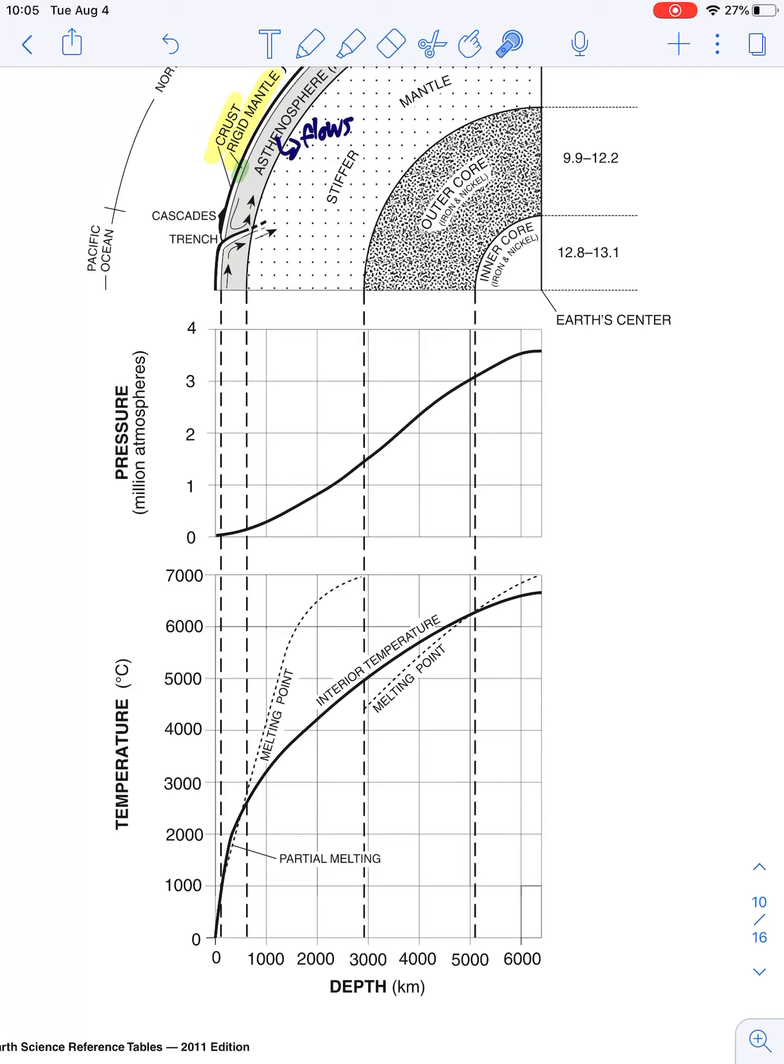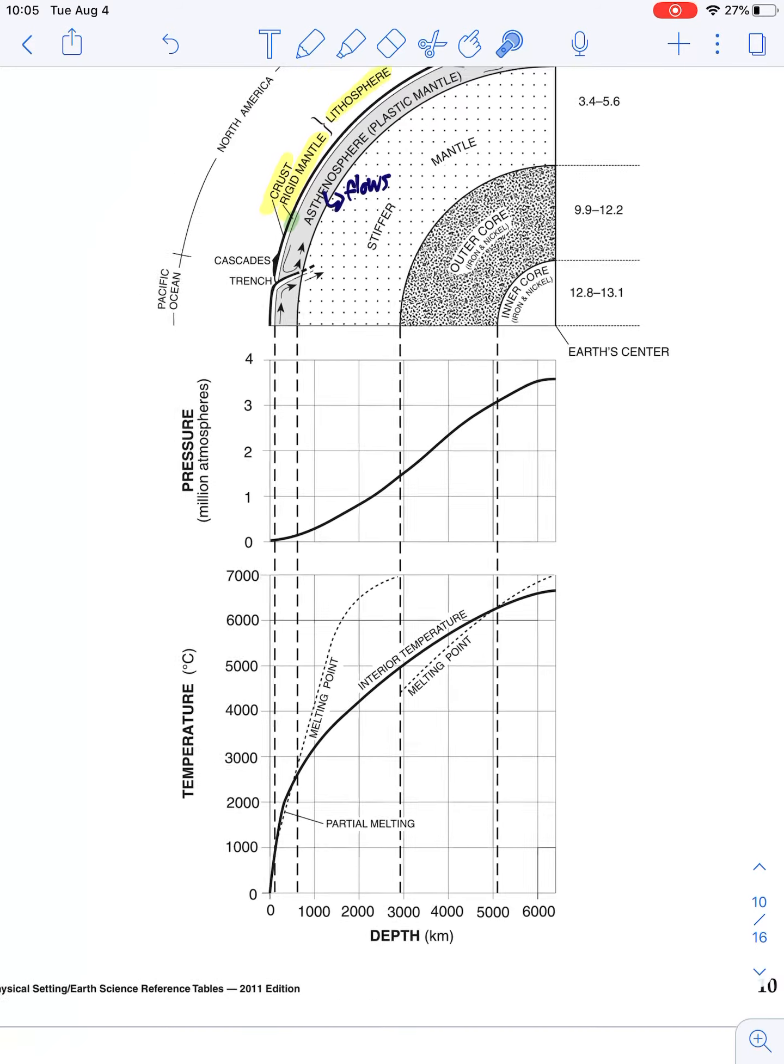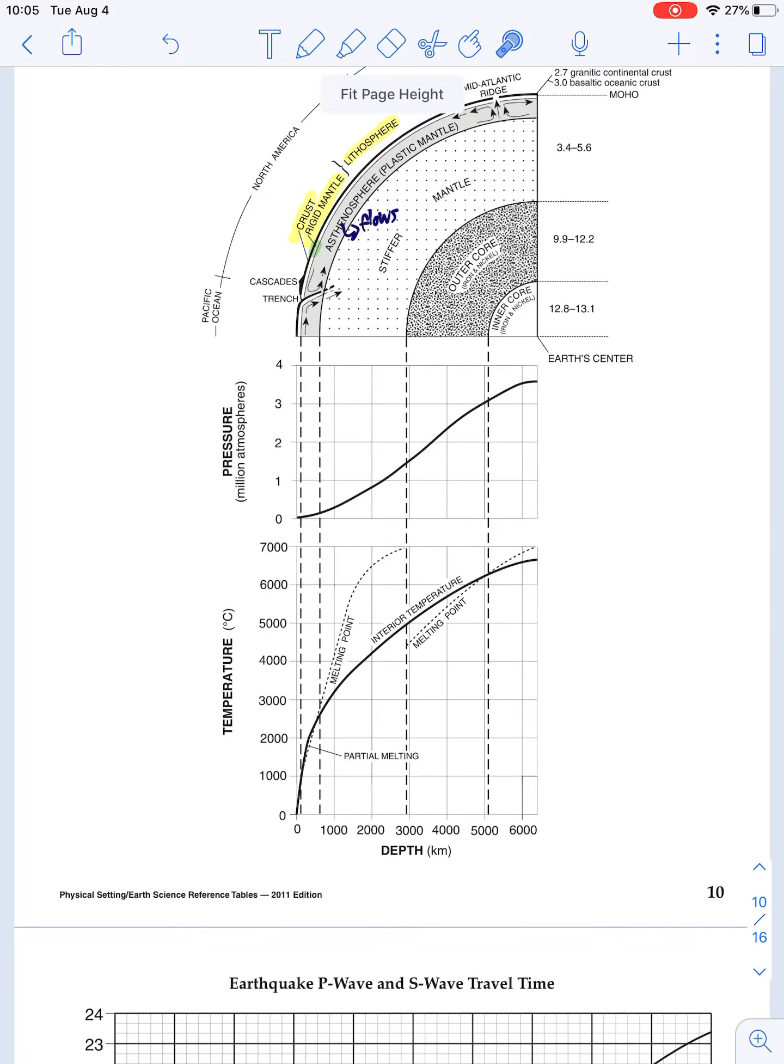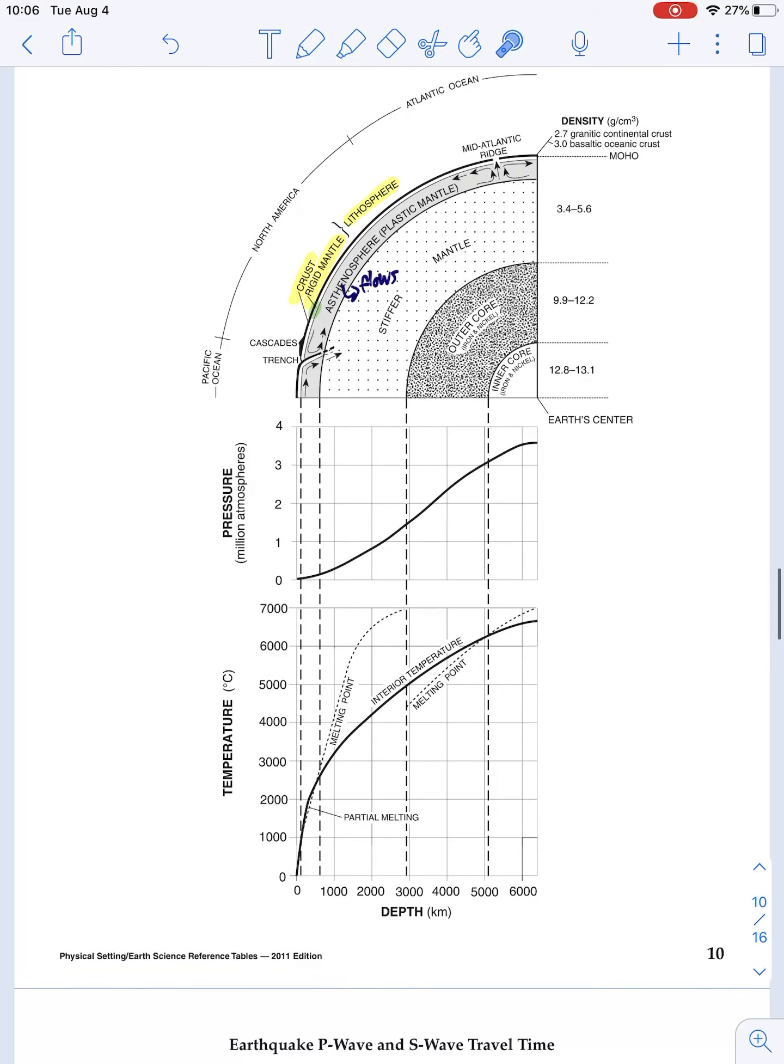The last thing that I really wanted to point out here was that the different layers of the Earth's inside, not the atmosphere, are different phases. Some of them are solid. Some of them are liquid. We said the asthenosphere flows. I already wrote that down because that's kind of the best way of describing that one. But the other layers we can kind of figure out by looking at the melting point versus the interior temperature.